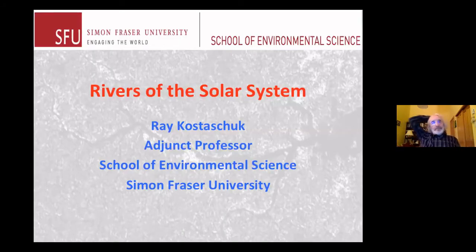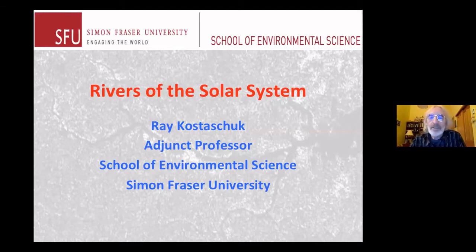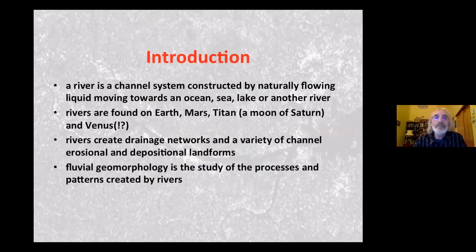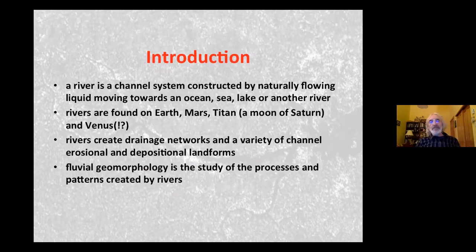I'm in the School of Environmental Science at SFU, adjunct professor, and I've been doing research on rivers for too long. So what is a river? This is a vague definition, and I wanted to keep it vague because a lot of the definitions you find of rivers are Earth-centric. I wanted to make this a little bit broader. A river is a channel system constructed by a naturally flowing liquid, and as we'll see, there can be different types of liquids that form river channels.